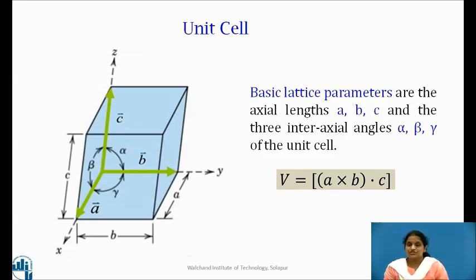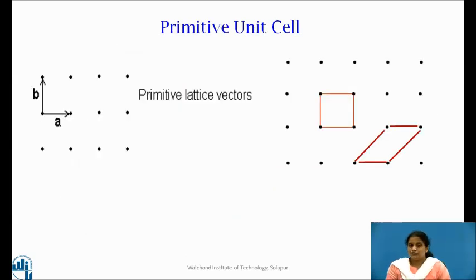Now, the next question is, if we consider the periodicity, then how to select the unit cell from space lattice? Unit cells are of two types, that is primitive and non-primitive unit cells.